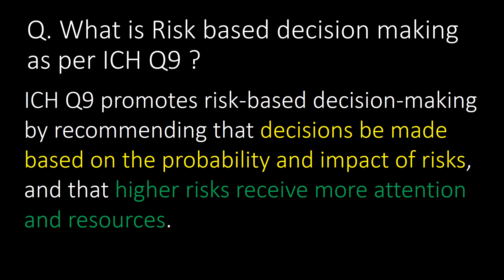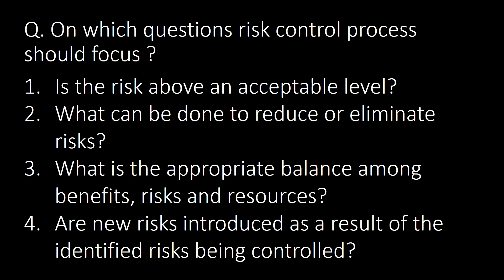What is risk-based decision making as per ICH Q9? ICH Q9 promotes risk-based decision making by recommending that decisions be made based on the probability and impact of risk, and that higher risks receive more attention and resources. The risk control process should focus on: Question 1 - is the risk above an acceptable level? Question 2 - what can be done to reduce or eliminate the risk? Question 3 - what is the appropriate balance among benefits, risks, and resources? Question 4 - are new risks introduced as a result of the identified risk being controlled?